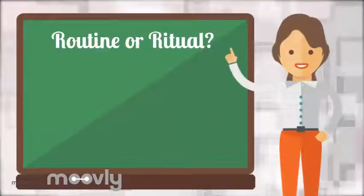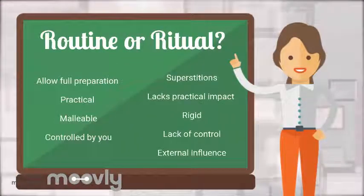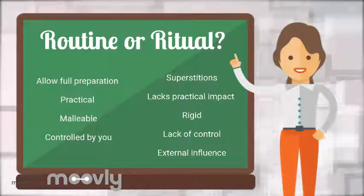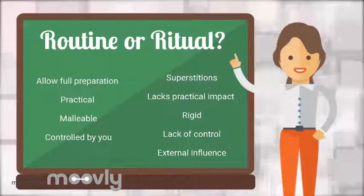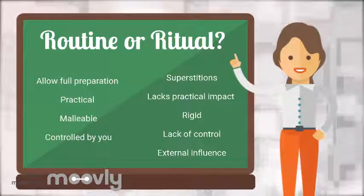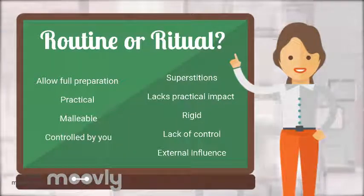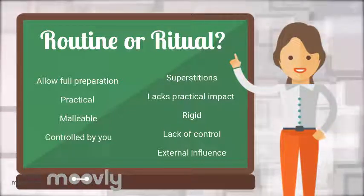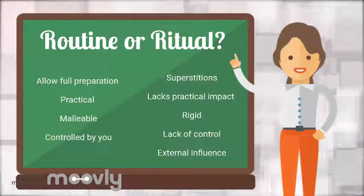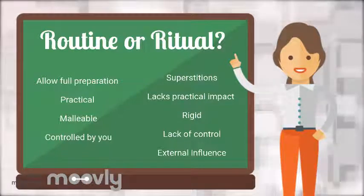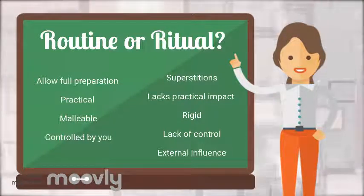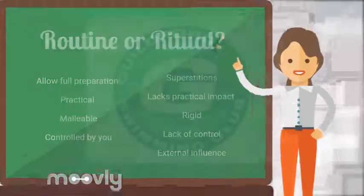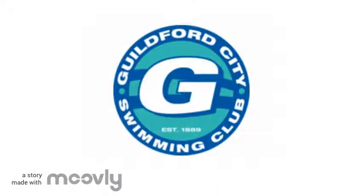It is important to know the difference between a routine or a timeline and a ritual. Routines allow you to fully prepare yourself for your race — every aspect of the routine should be practical and have a purpose. Routines are also malleable and easily changed; they are fully controlled by you. If you ever feel like your timeline contains superstitions, elements that lack practical impact and doesn't allow for change, then it has become a ritual. This could end up having a negative impact on your performance.